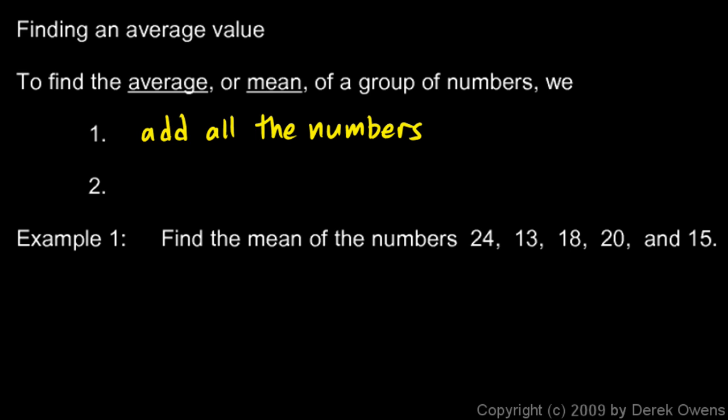We add all the numbers up and get a total, and then we divide by the number of numbers.